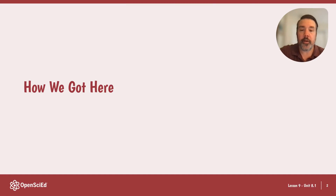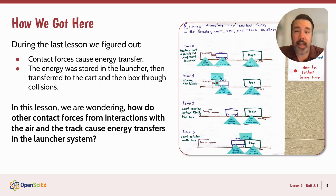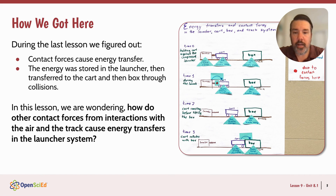Let's remind ourselves first how we got here. In the last lesson, we spent a lot of time tracking the energy — figuring out where it came from and where it went. But at the end, we were like, well, where did it all go? The cart and the box stopped. So in this lesson, we're really wondering about where that energy went. We left off thinking the track and the air might have something to do with it, so we want to find out more about the contact forces and interactions between the air and the track.